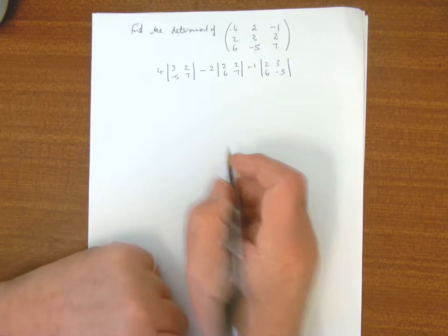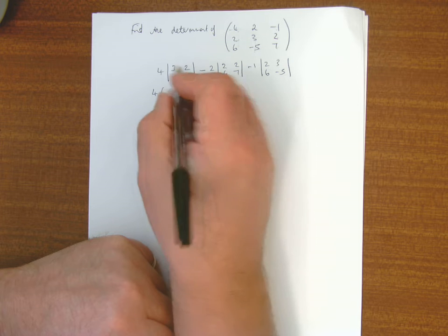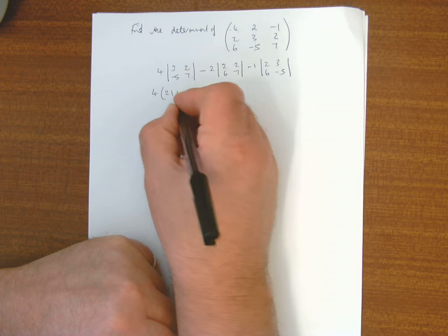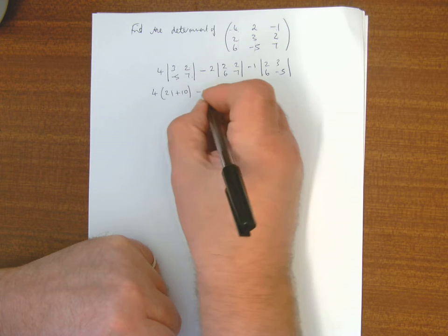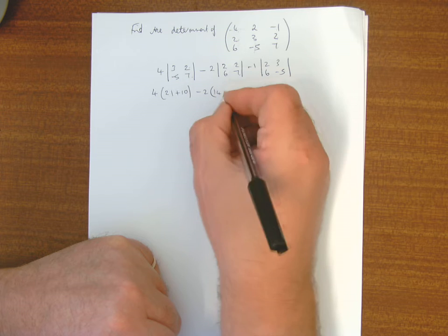So that's 4, like I did on 2x2 then, leading diagonal, leading diagonal, 3, 7, so 21, take away minus 10, so that's plus 10, minus 2, lots of 14, take away 12.